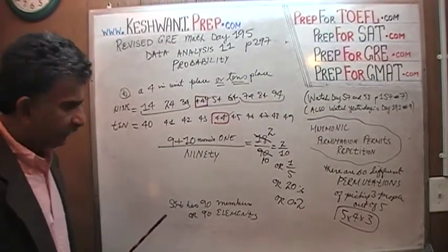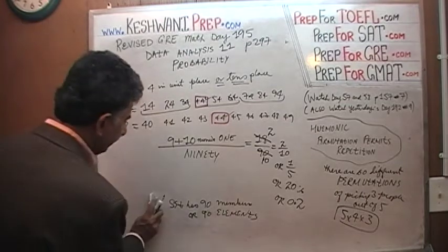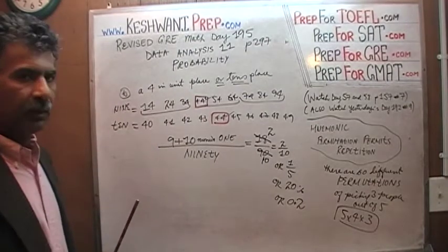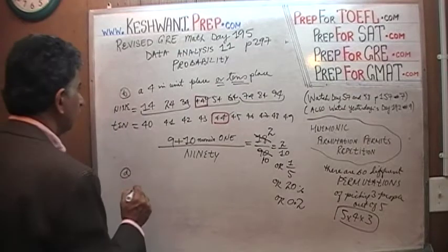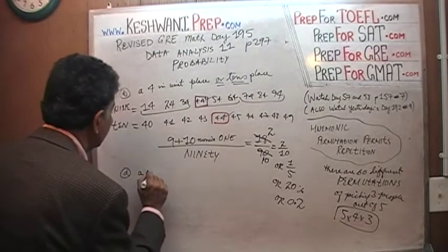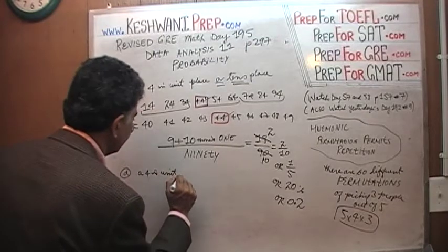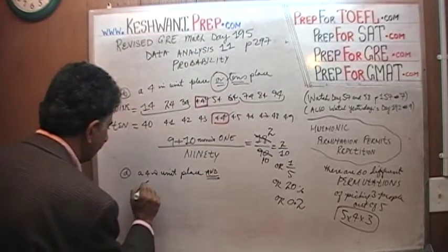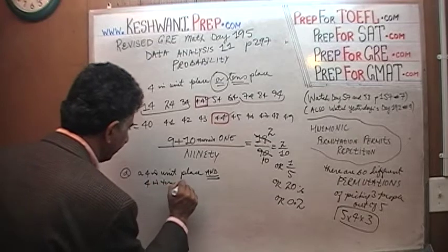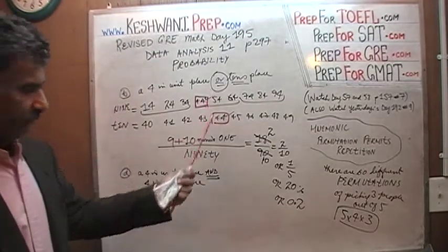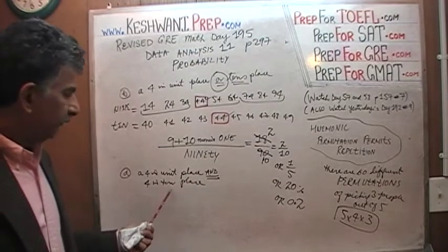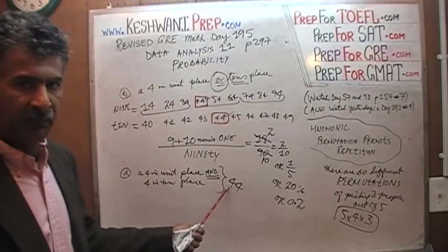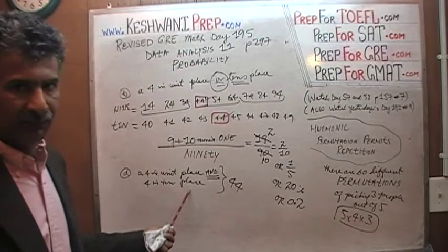Let's do Part C — but before that, let me give you Part D. Part D asks: what are the odds of picking an integer with four in the unit place and four in the tens place? If you want four in the unit place and four in the tens place, there is only one possibility, which is forty-four. So here we are asking: what are the odds of picking one particular number?